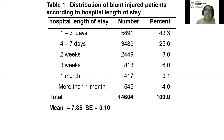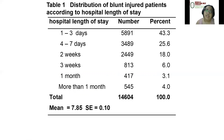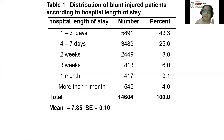This is an example of a table of data showing the distribution of blood-injured patients according to hospital length of stay. The first column would be hospital length of stay, the second column the number of patients, and the third the percentage of patients.